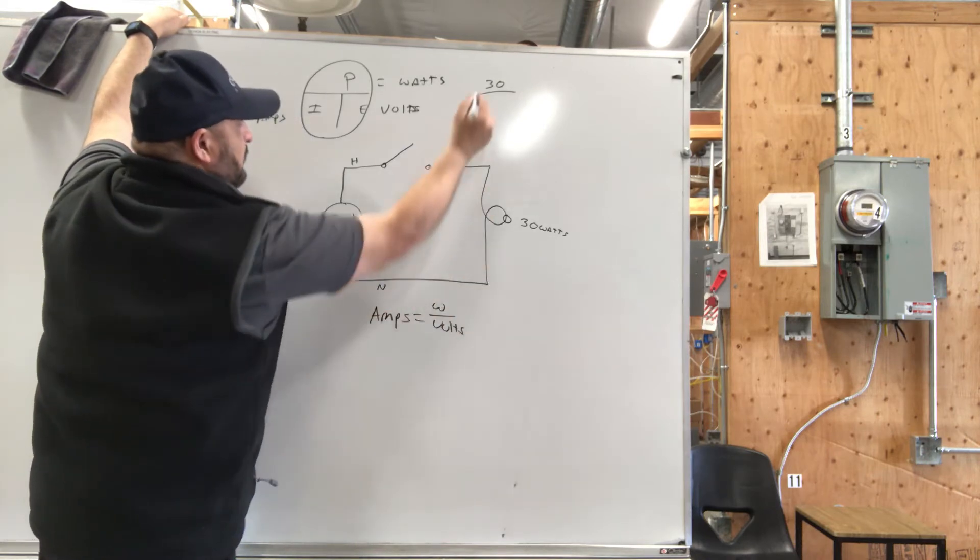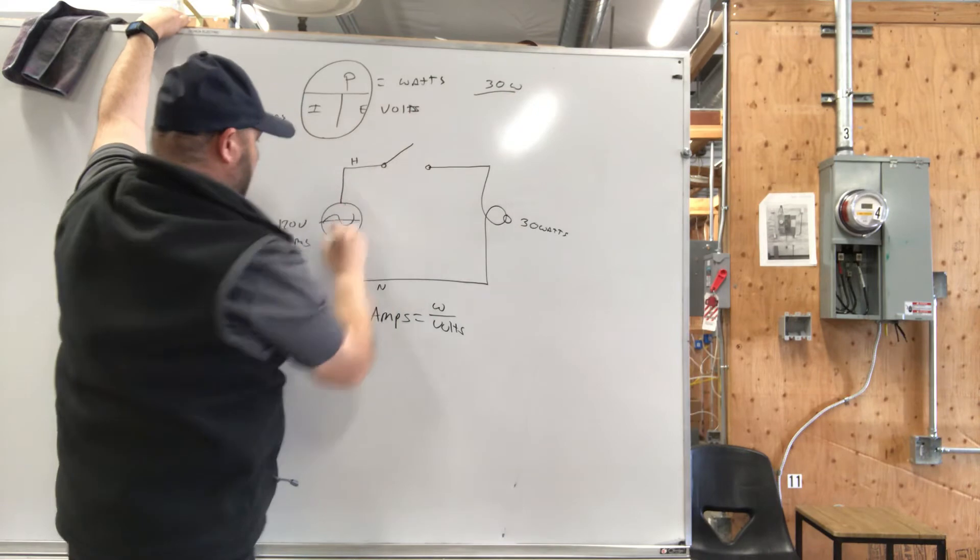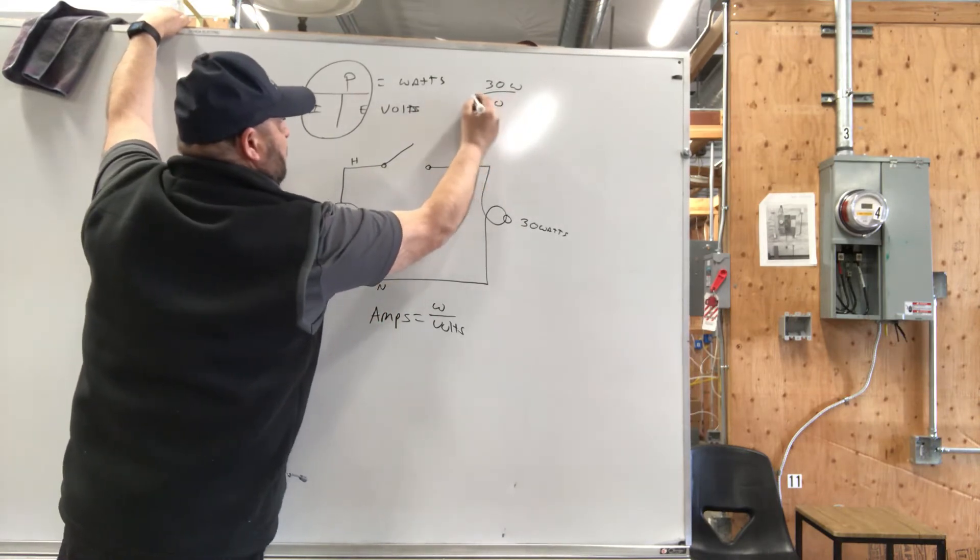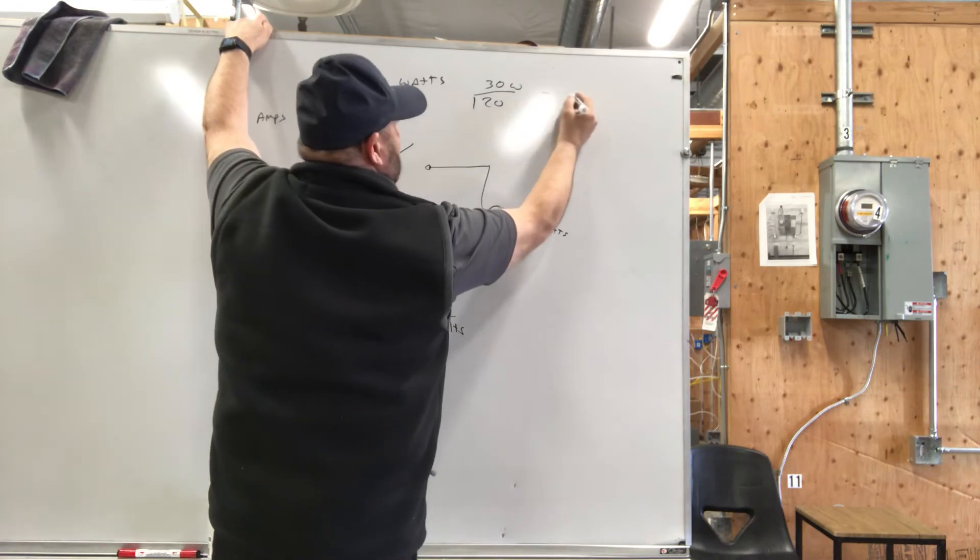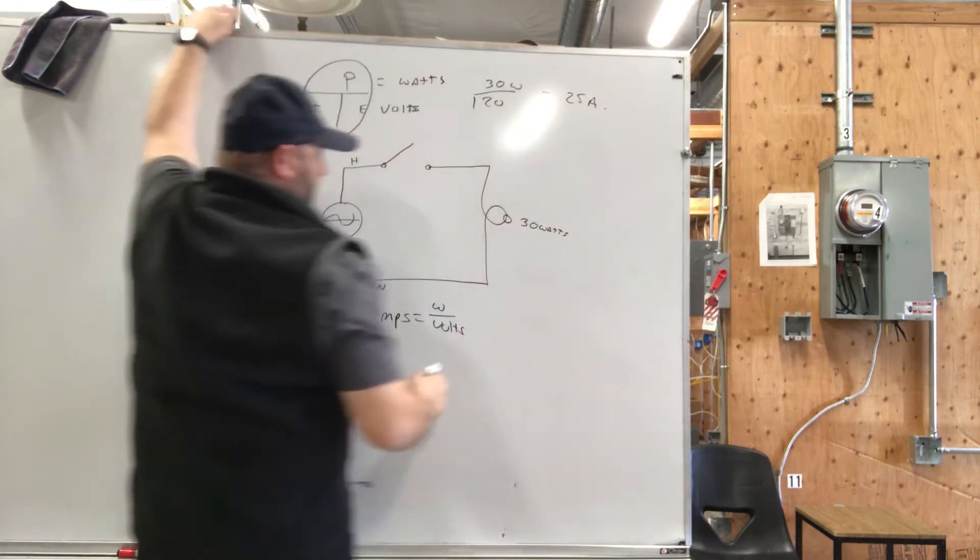The watts is 30 watts, the volts is 120. This equals 0.25 amps.